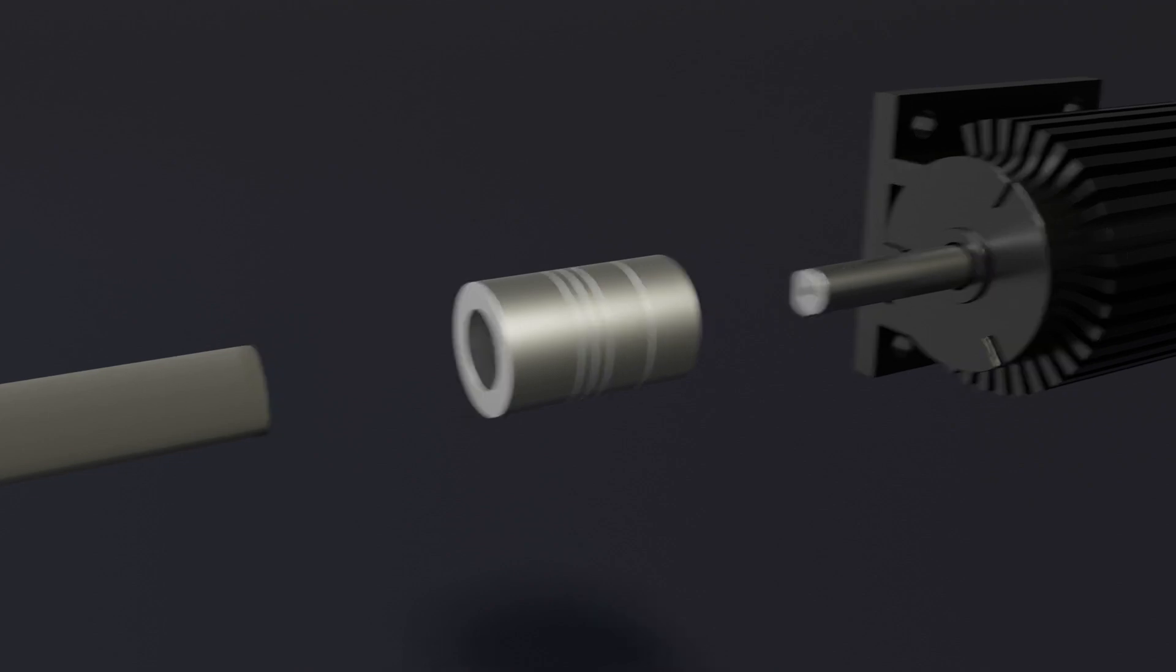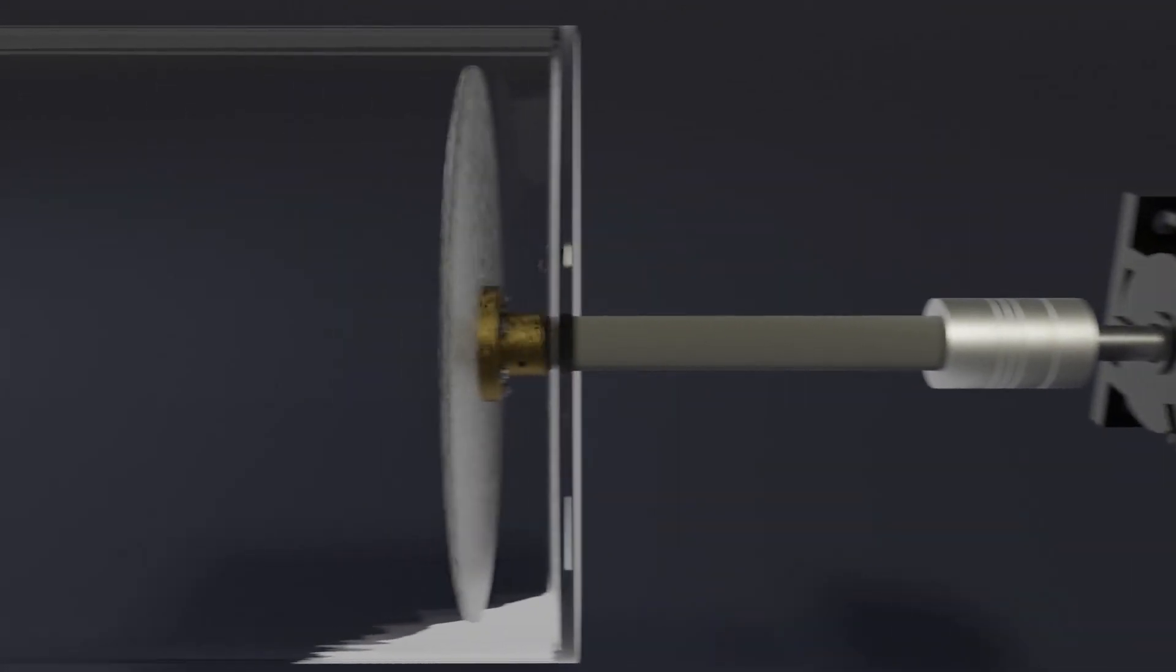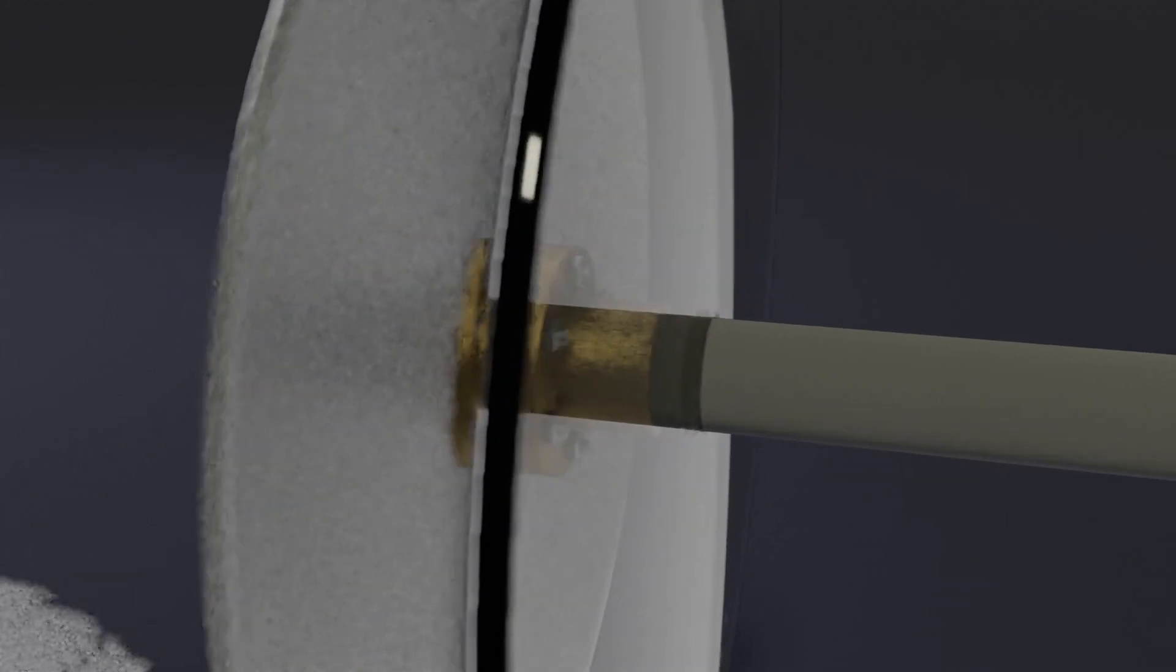The engineering challenge is where the driveshaft meets the container. We want to pass the mechanical power in while preventing the water from leaking out. Additionally, lower friction will also be nice. This will require a manufacturing precision that we do not have at home.